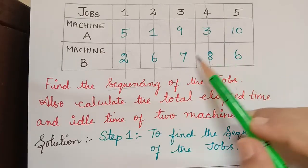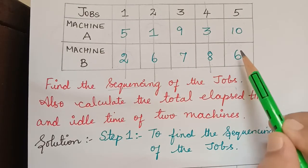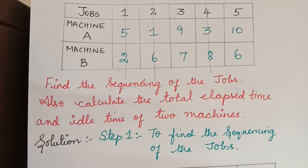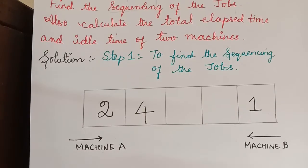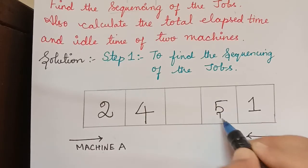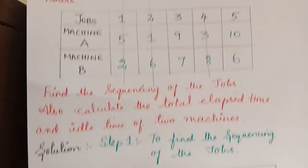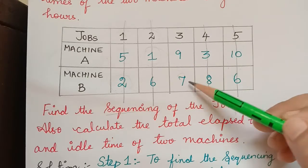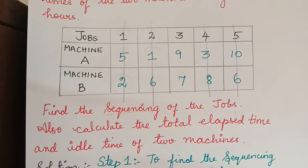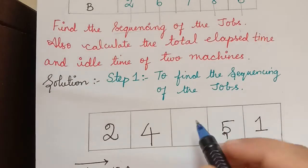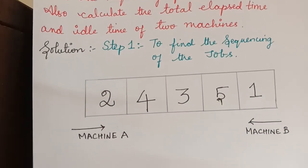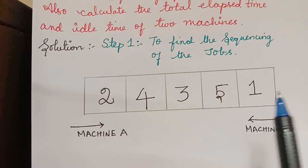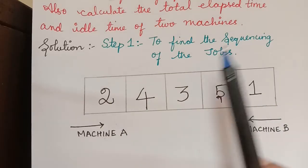The remaining elements are 9, 10, 7 and 6. The least element is 6, and the corresponding job is job 5. The machine corresponding to it is machine B, so job 5 is written from right to left. The only remaining job is job 3, with the least value 7 from machine B. The final sequence is: job 2, job 4, job 3, job 5, and job 1.